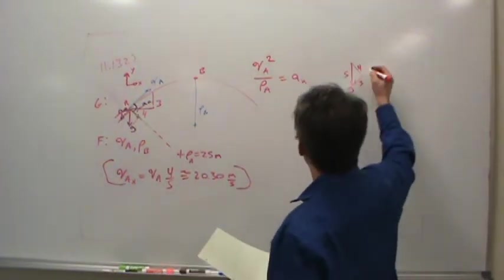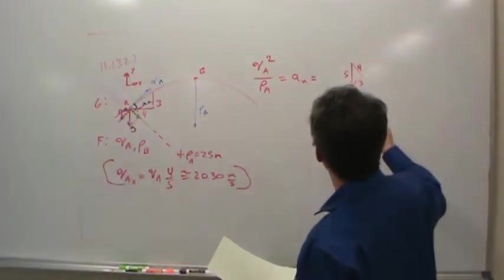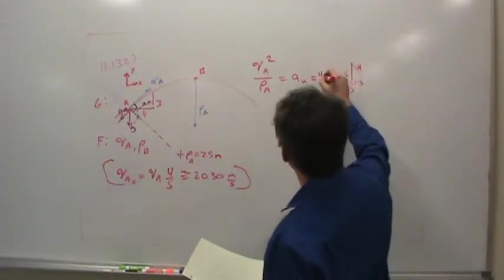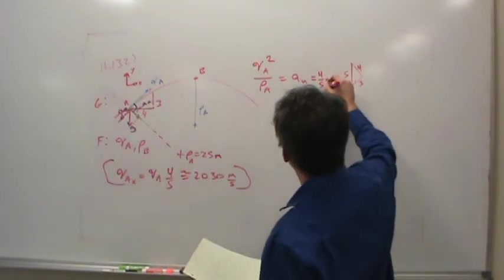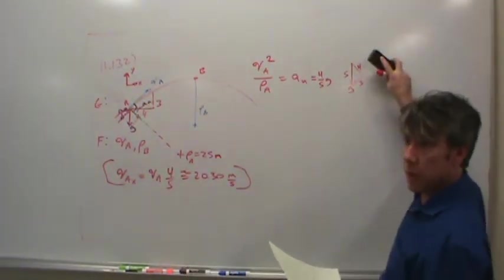All right. So anyway, the point is that the normal acceleration will be equal to what? Let's see. It would be four-fifths of g, right, because of the geometry. Can I erase this triangle? Is that okay? Yeah. All right.